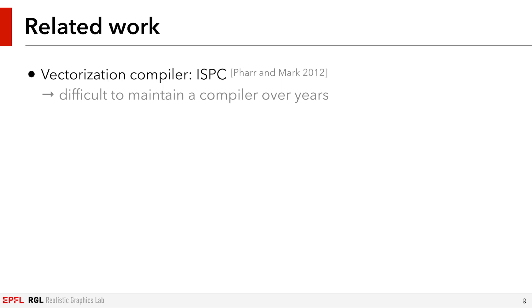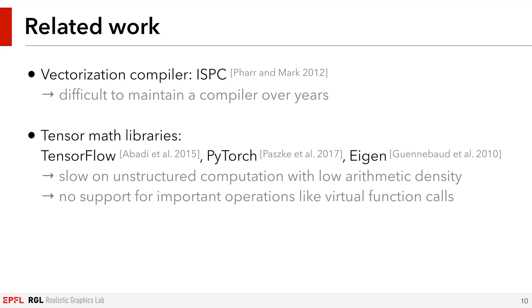There are existing systems built to support one or more of the features we are interested in. First, ISPC is a compiler built at Intel which allows automatically vectorizing code. Writing a compiler is certainly a good way to approach this problem, but we find it challenging to maintain a compiler without the support of a dedicated team. TensorMath libraries such as TensorFlow and PyTorch support CPU and GPU targets, as well as automatic differentiation, but they are not designed for the type of unstructured computation with low arithmetic density that we have to perform in rendering.